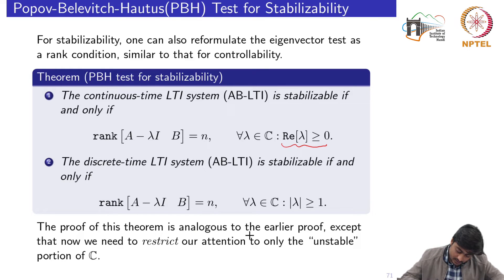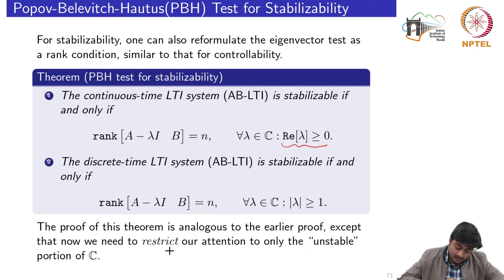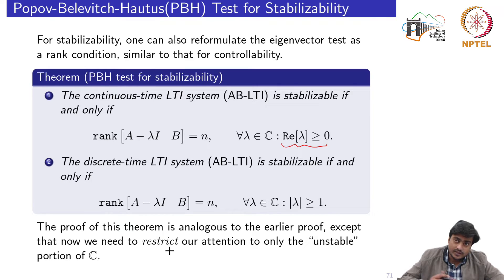The proof of this theorem is analogous to the earlier controllability proof, except that now we need to restrict our attention to only the unstable portion of the set of complex numbers where the eigenvalues lie. We won't go through the proof of this PBH test, but if we want to determine stabilizability directly from the given A-B pair, we first compute the eigenvalues of the A matrix and then carry out this test only for eigenvalues on the right-hand side.